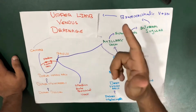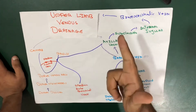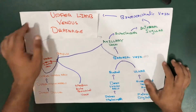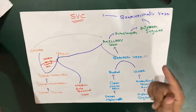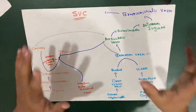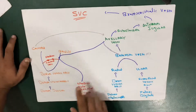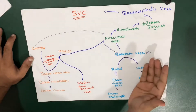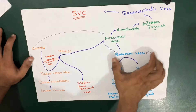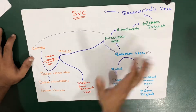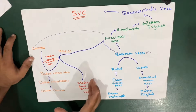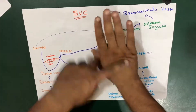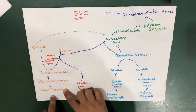Let's have a quick review of the upper limb venous drainage. We're going to talk about the superficial veins and the deep veins, which is called the brachial vein. From the superficial veins, the veins are actually on the dorsal side.